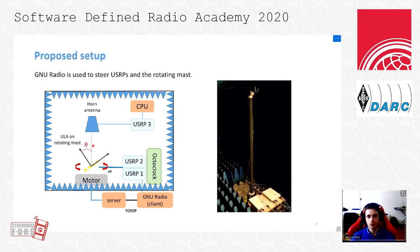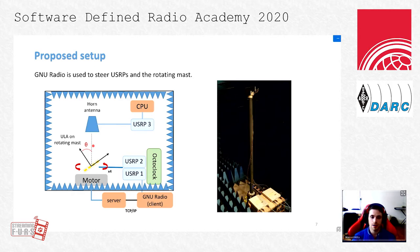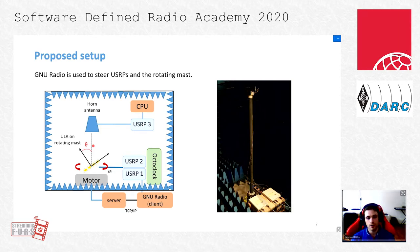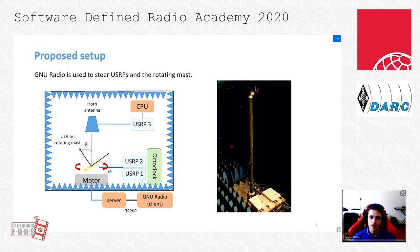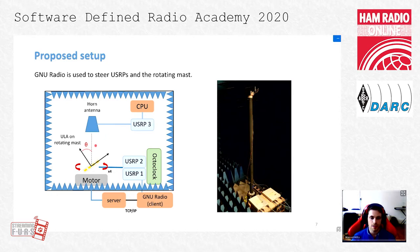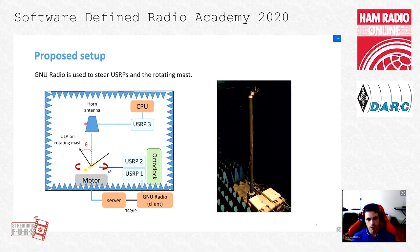Here is the experimental setup we proposed to solve this problem. We placed two SDRs — in our case two USRPs X310 — in order to steer our four-element ULA. Our SDRs are frequency and time synchronized using an OctoClock. Our ULA, as you can see in the picture on the right, is placed on a mast that can be rotated using a motor, so that we can precisely control the angle between the transverse to the antenna array axis and the reference transmitter, here shown as a horn antenna.